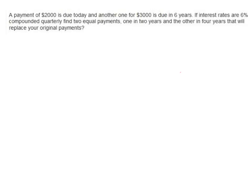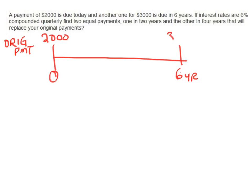In this problem, we have a payment of $2,000 that's due today and another one of $3,000 that's due in six years. Let's set up our time diagram. The original payment plan shows the original payment of $2,000 is due today, and another one of $3,000 is due in six years. Let's put that on the top part of our time diagram for the second payment.